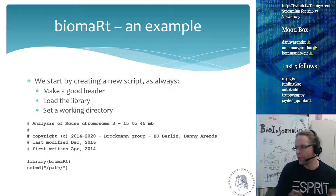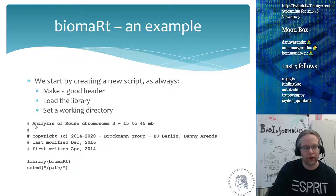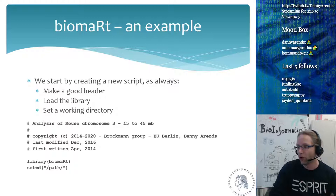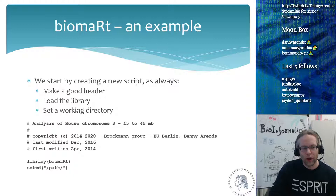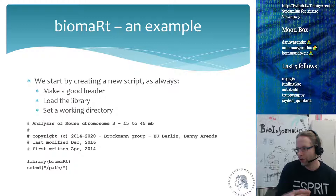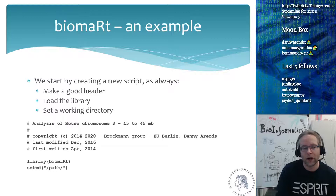In R, when we create a new script, as always we want to make a good header — I'm going to analyze mouse chromosome 3 in this region, it's copyrighted, with the date first written and last modified. After we've created a good header, we load the Biomart library. Of course we have to install it first, but after that we can just load it. Then we set a working directory to where we want to store our data — where we want to write and read files. Although we're not going to read files because we're going to get our data from Biomart directly into R.